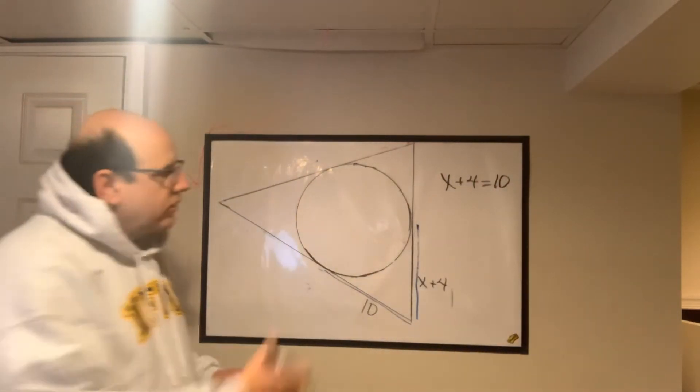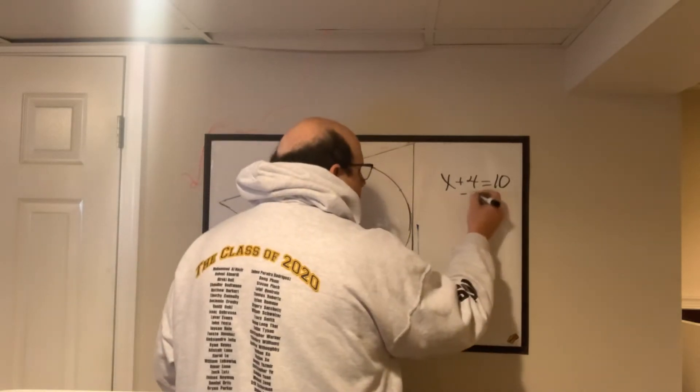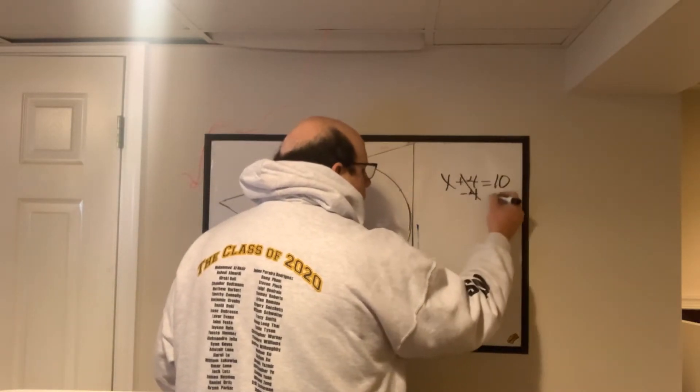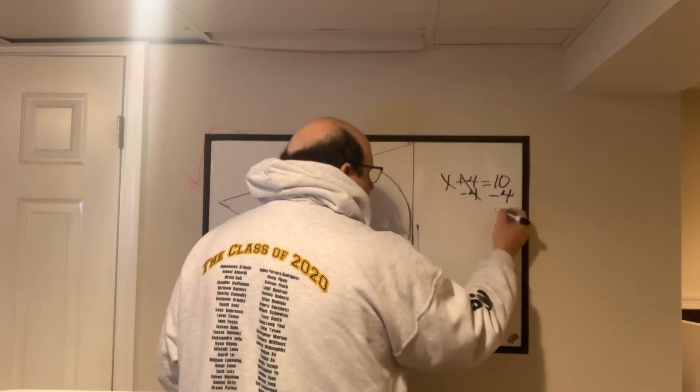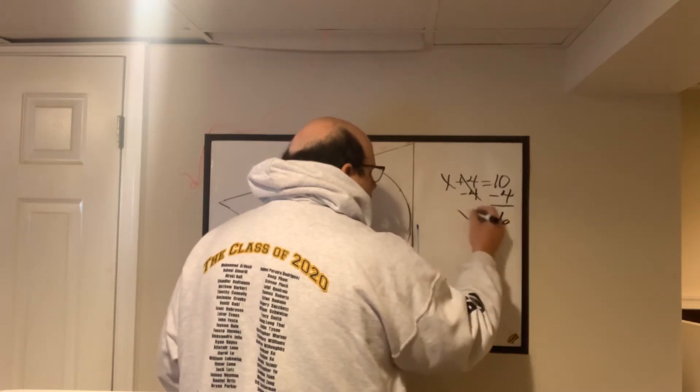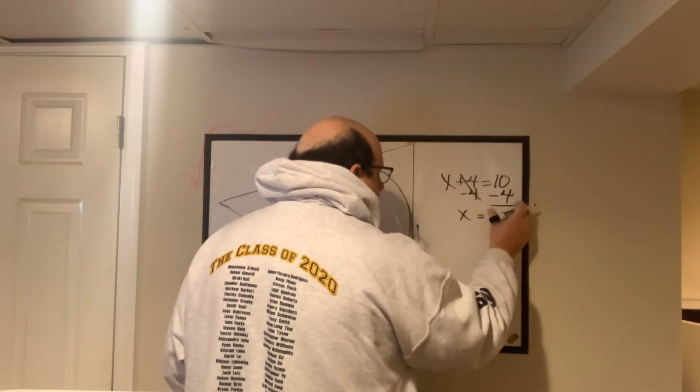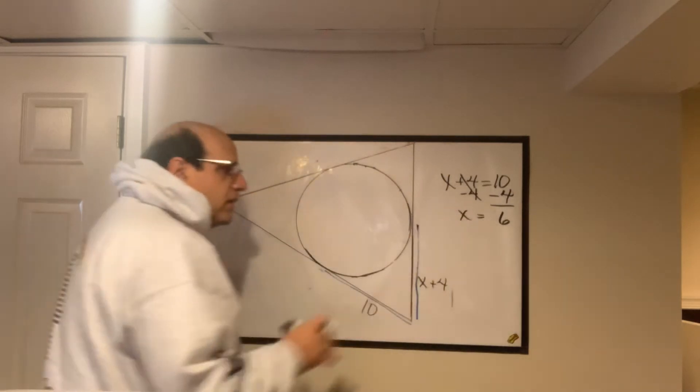Now, what number plus 4 equals 10? We already know that. And you solve it this way. And x equals 6. All right, so we're good. Everything's great there.